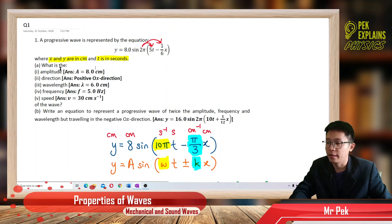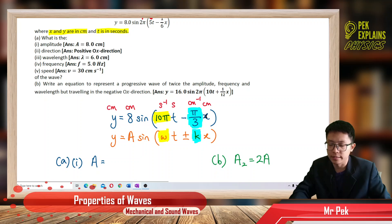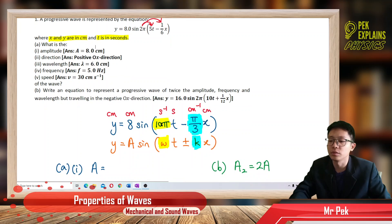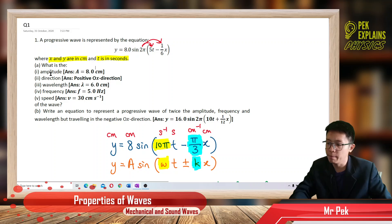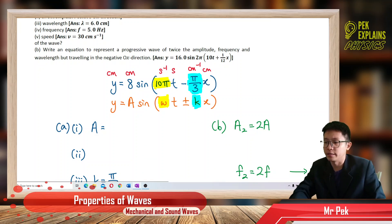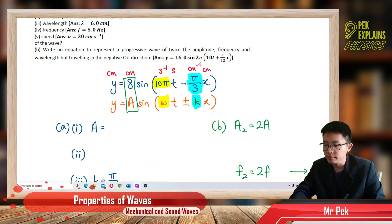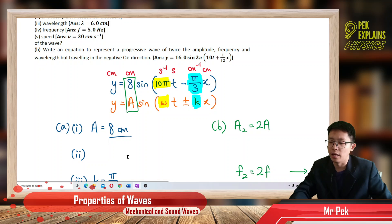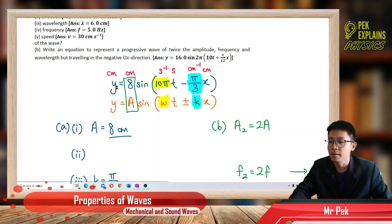Since y is in cm, the amplitude is 8 cm, not 8 meters. And since x is in cm, the wave number k has units of per cm, not per meter. The unit is very important. So the amplitude is 8 cm.